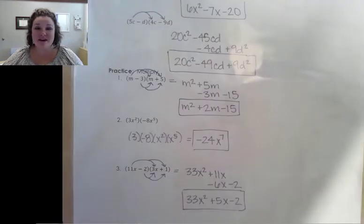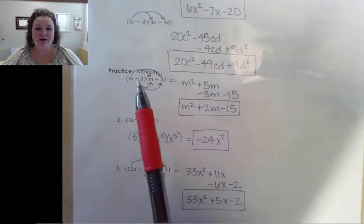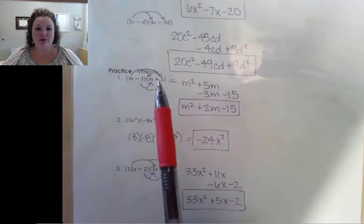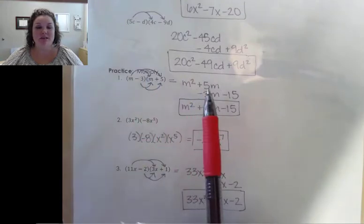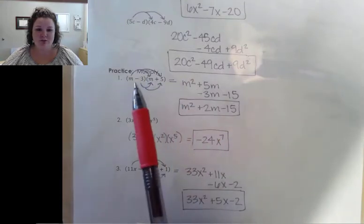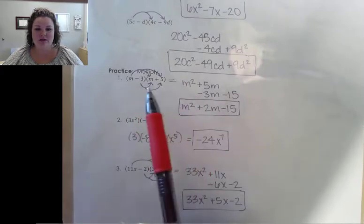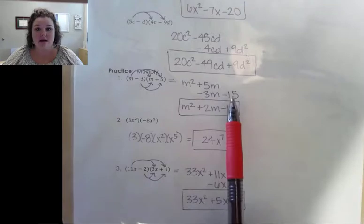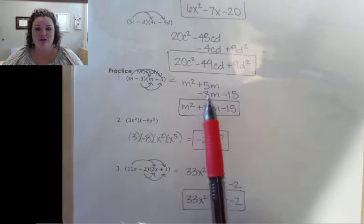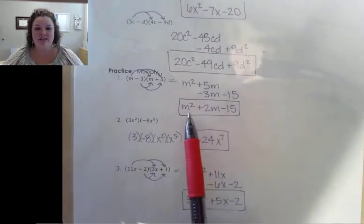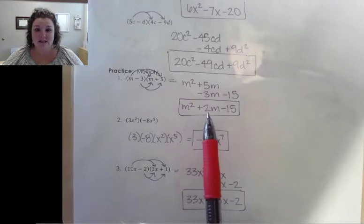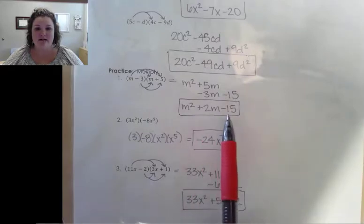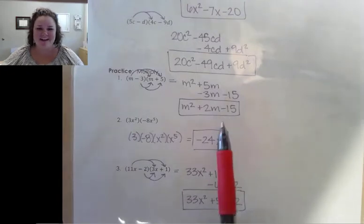All right, so let's go ahead and go over them. On number one, when you distribute your m over to the second polynomial, you should get m squared plus 5m. When you distribute the negative 3 to the terms in the second polynomial, you should get negative 3m minus 15. You combine your two m terms and you should end up with m squared plus 2m minus 15. If you need to look at that a little bit more closely, always remember you can always pause the video if I'm going over them too fast.